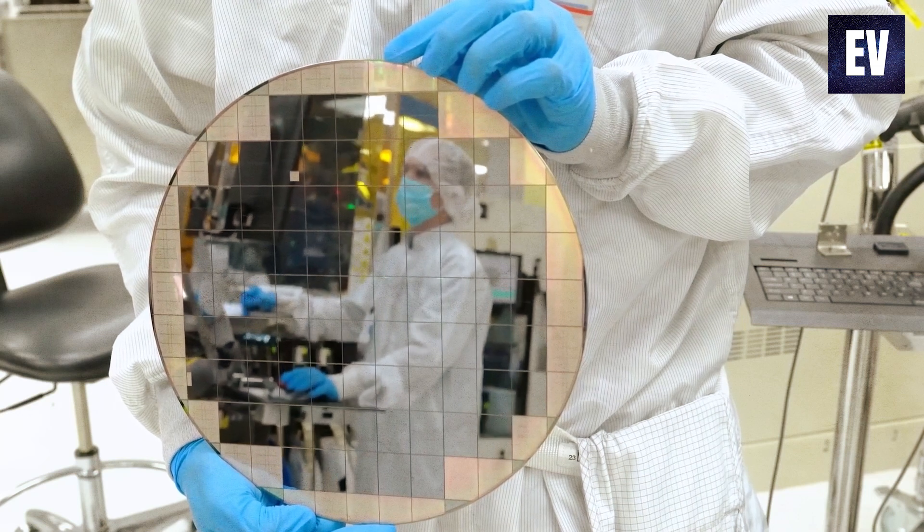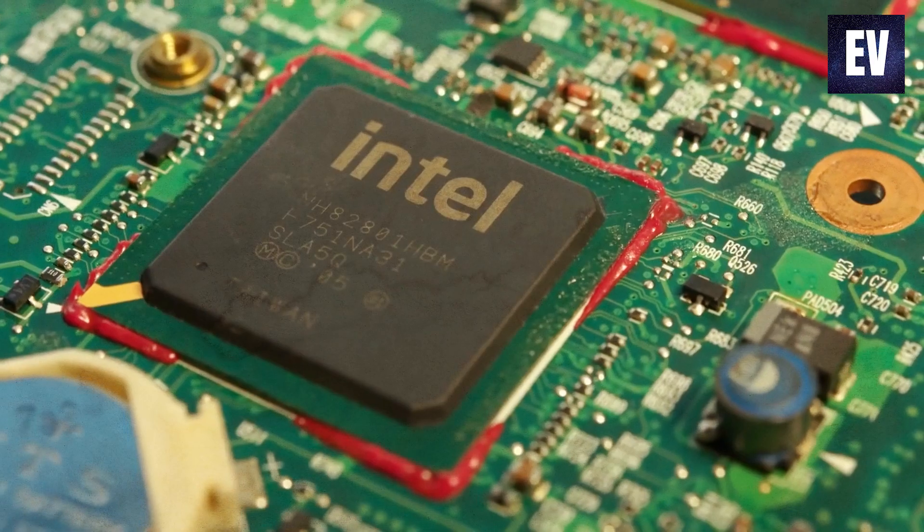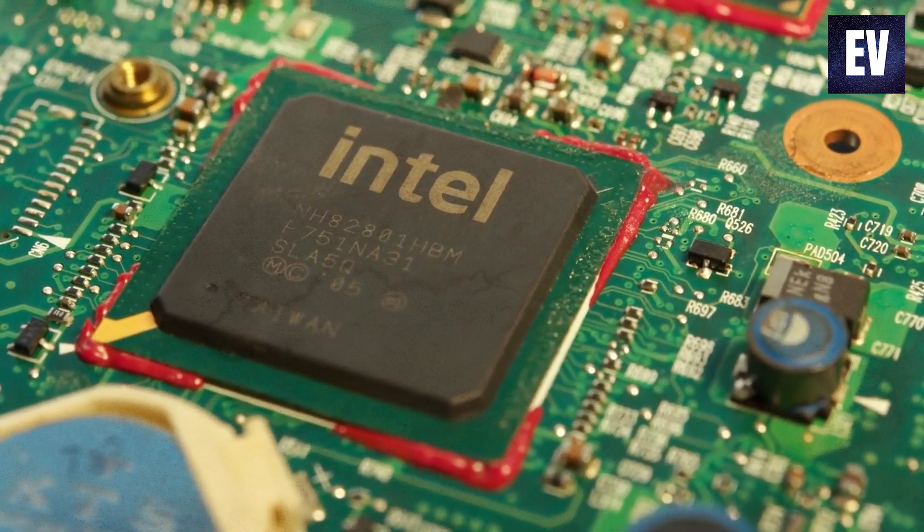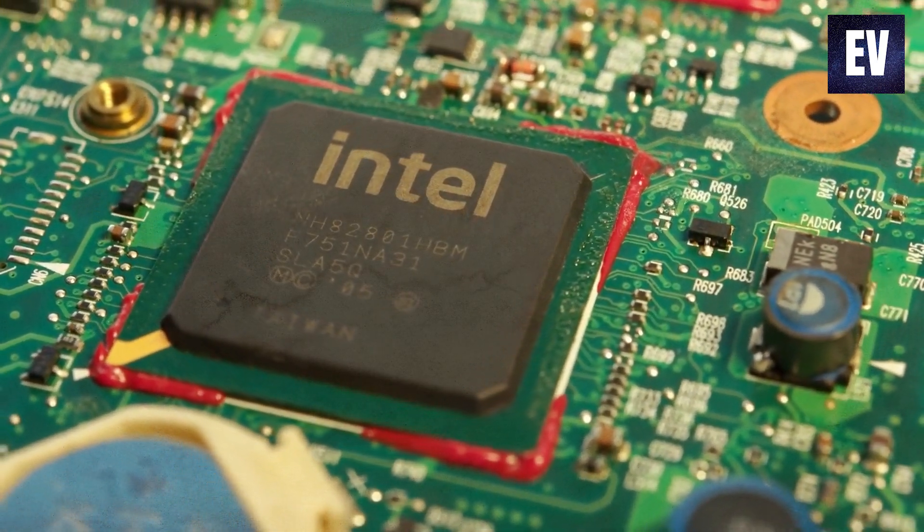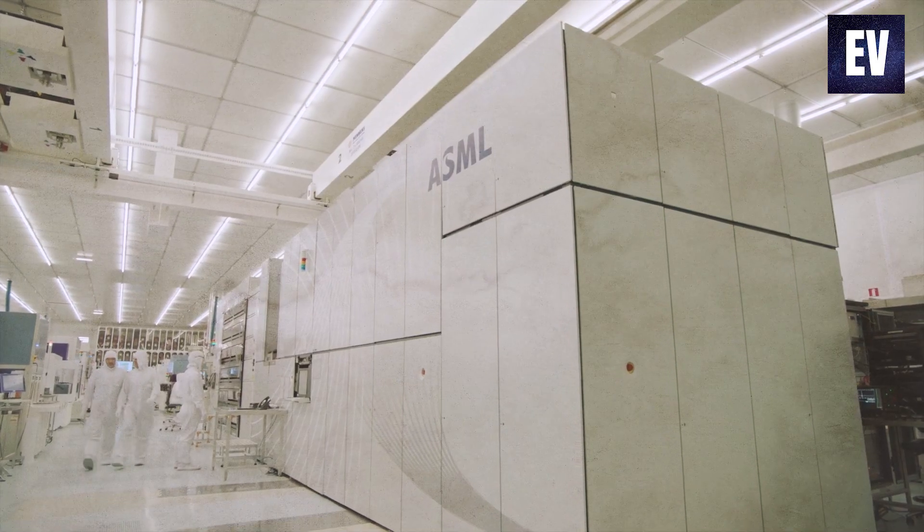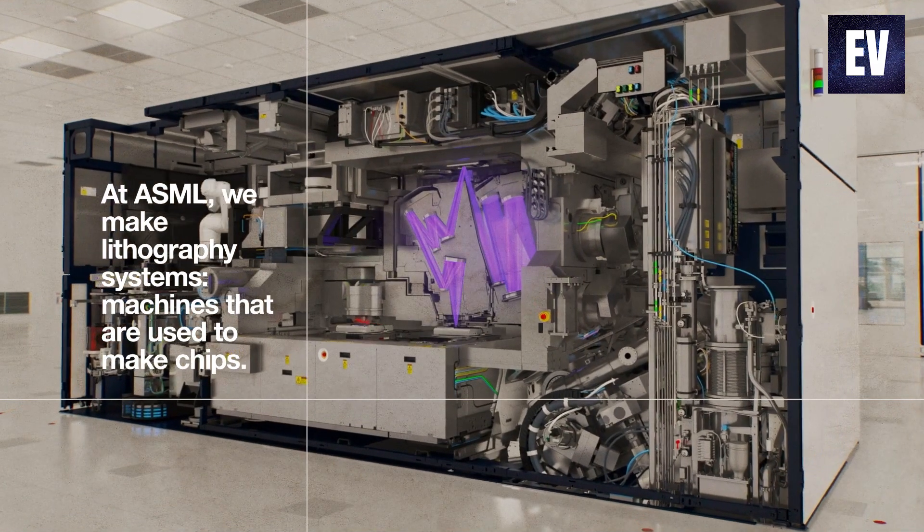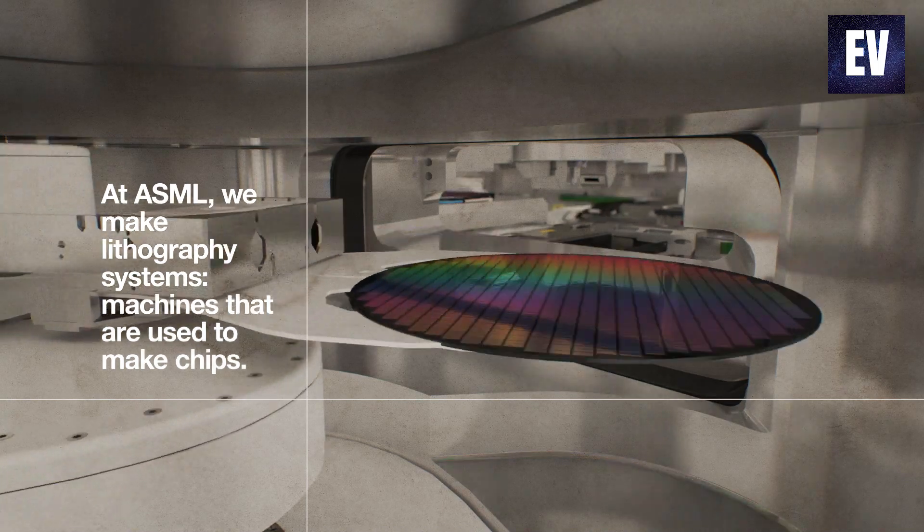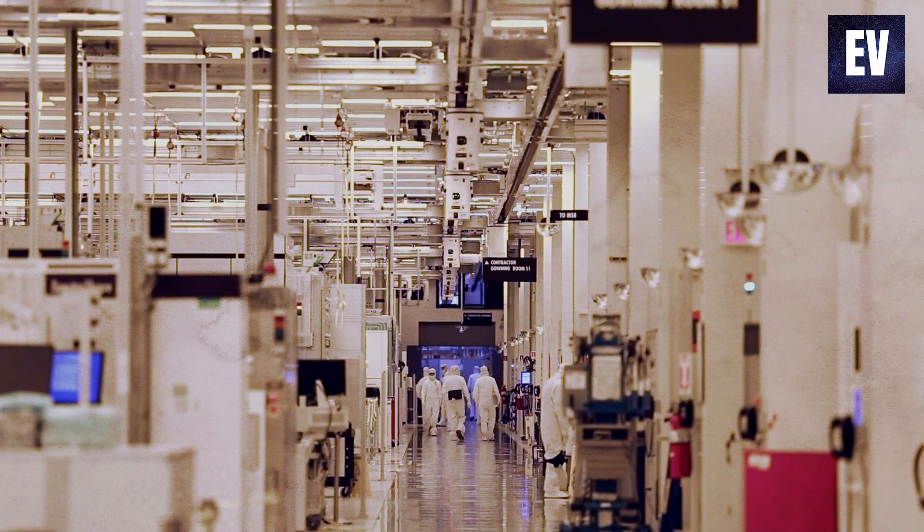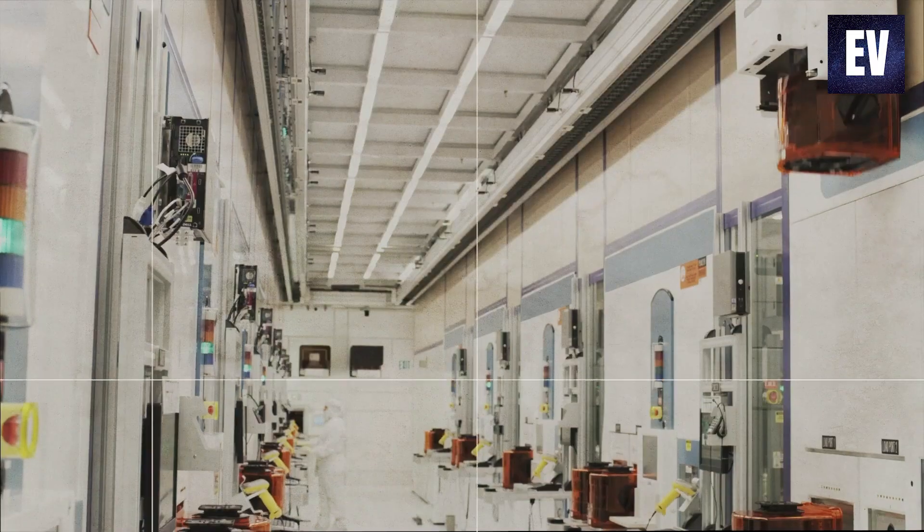Even large corporations such as TSMC and Intel rely on equipment and tools from other companies to complete their manufacturing processes. A small number of companies hold significant power in that field. ASML, a Dutch business, is the only company in the world capable of manufacturing a machine that chip manufacturers require to build the most modern chips.